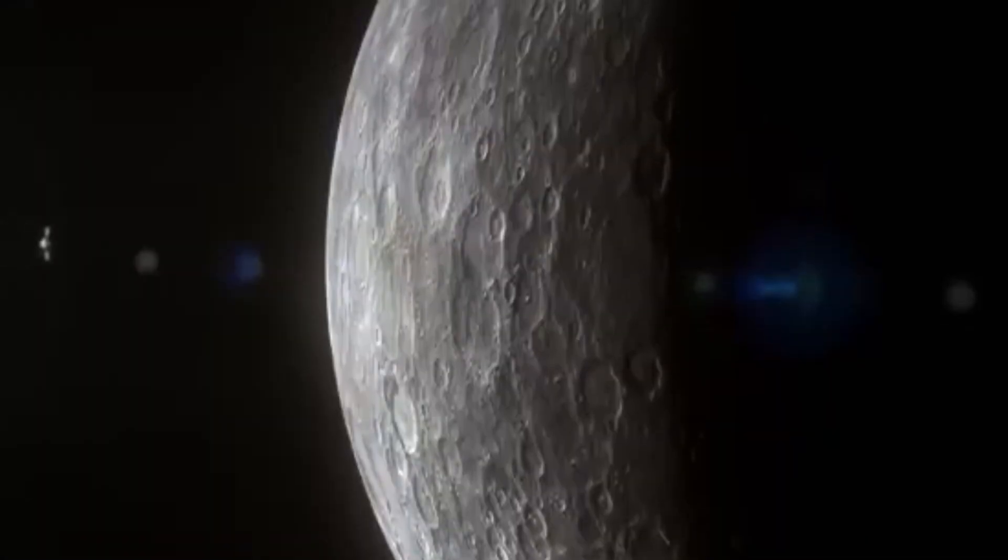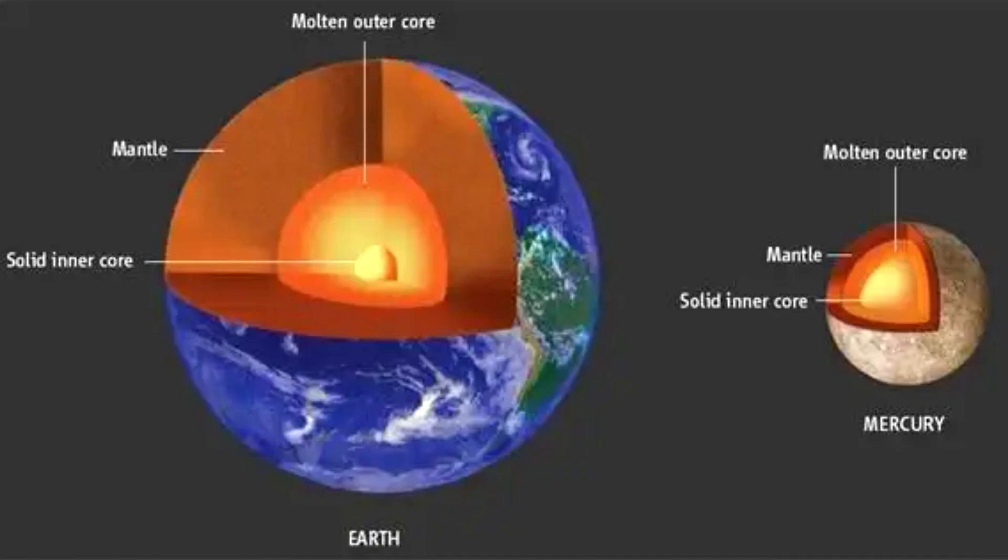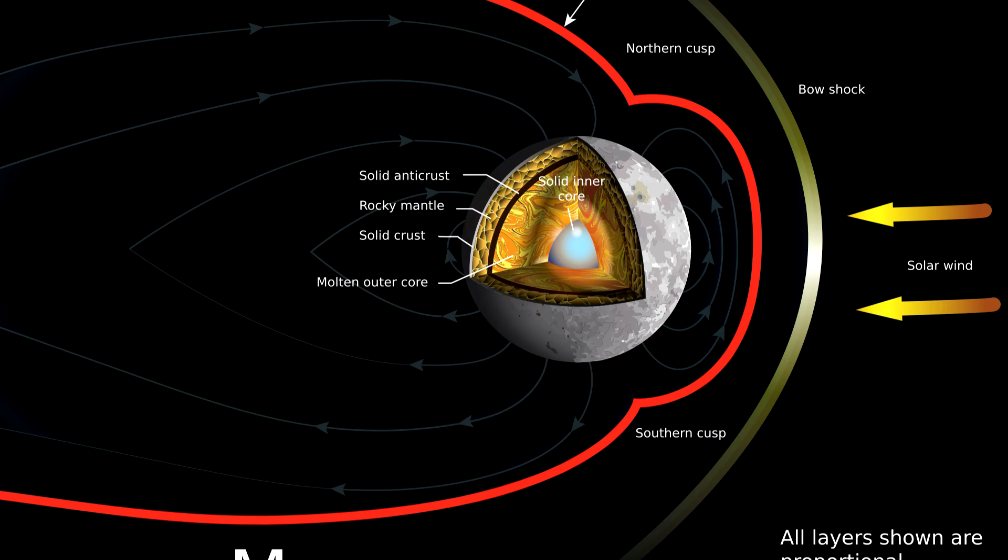One of Mercury's most fascinating mysteries is its unusually large core. A study led by planetary scientist Dr. Nancy Chabot at the Johns Hopkins Applied Physics Laboratory revealed that Mercury's core constitutes about 85% of the planet's volume, a stark contrast to Earth's core, which comprises only about 15% of its volume.